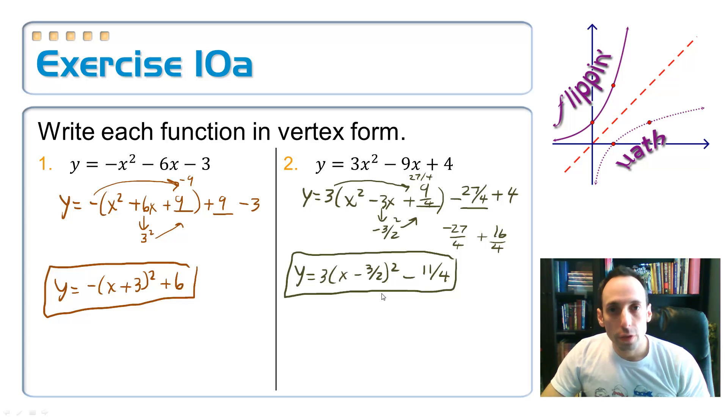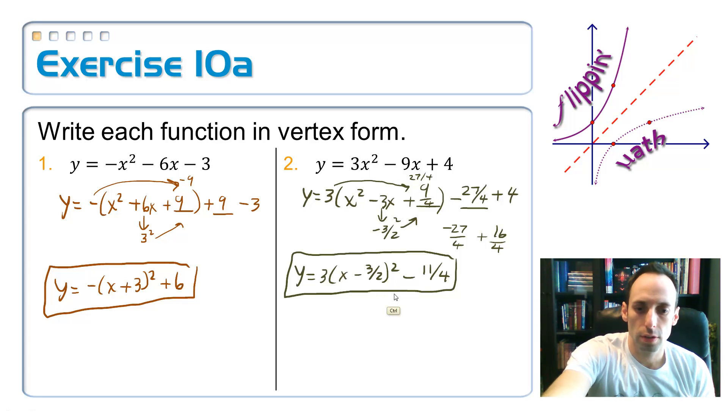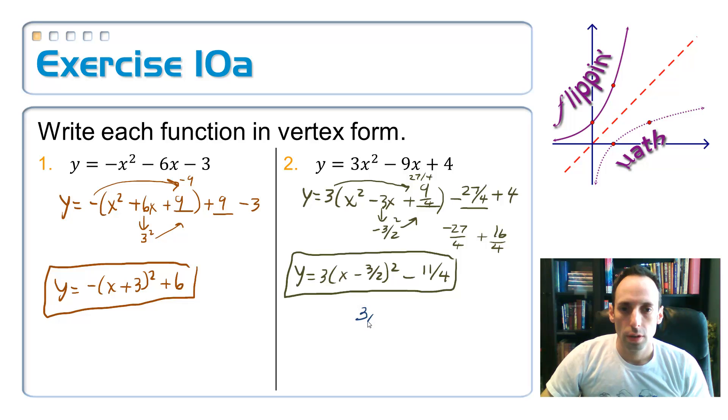What is the vertex? The vertex is 3 halves comma 11 fourths. Oh, that color really brightens that up a bit. All right, well that was it.